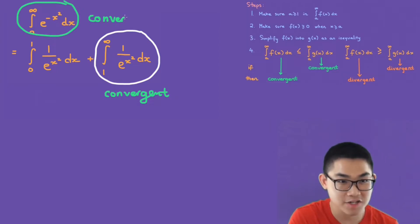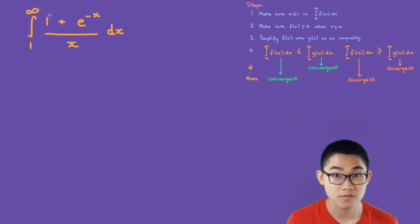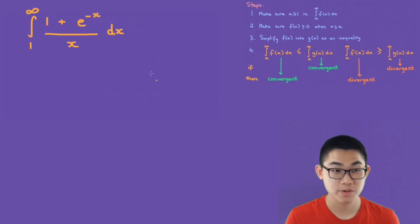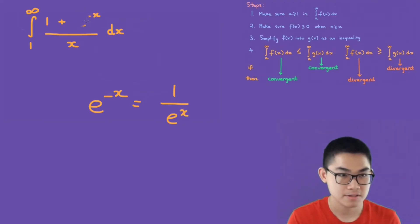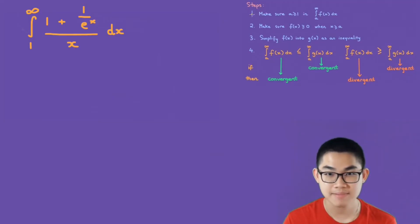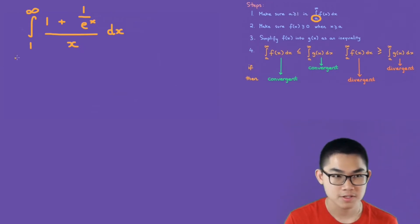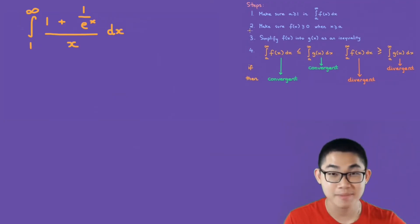So we found out that the integral from one to infinity is convergent, and therefore our original function is also convergent. That is the answer: the integral from zero to infinity of e to the power of negative x squared dx is a convergent integral. Let's do one more example. This time we want to determine if this integral is convergent or divergent. I'm going to convert e to the power of negative x into one over e to the power of x just to make it easier to see.